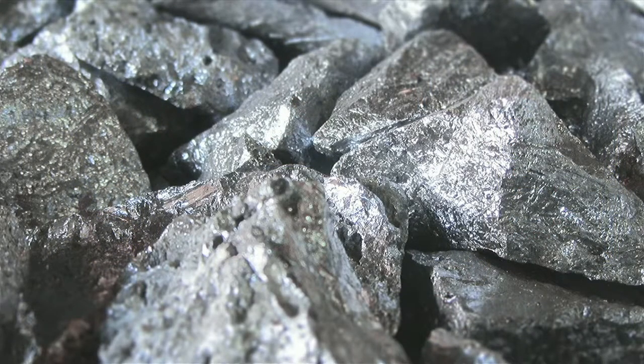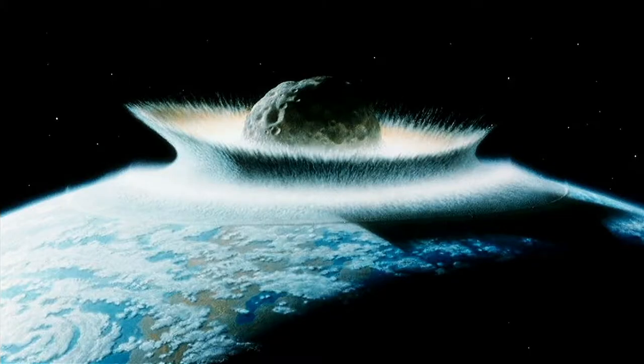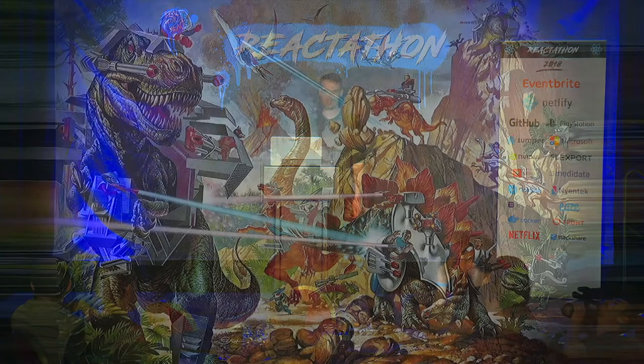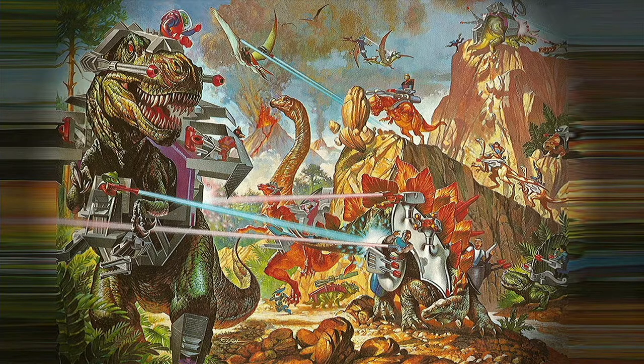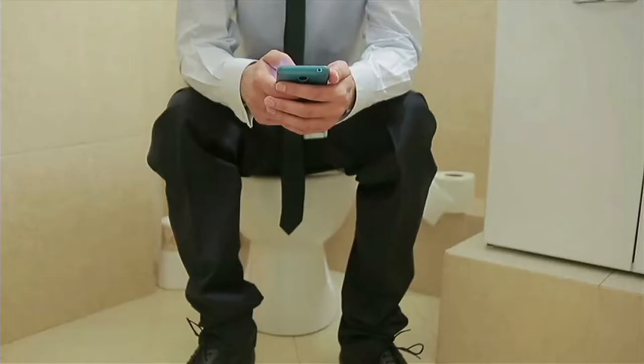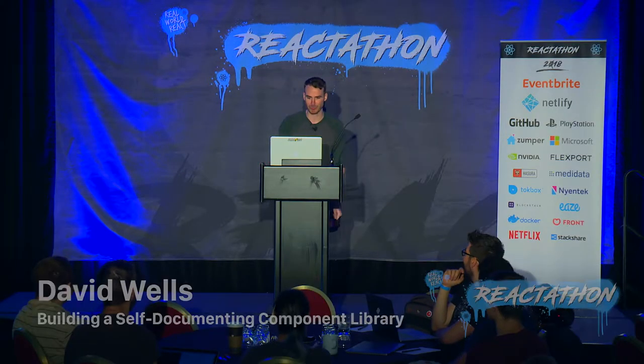So a long, long time ago — 65 million years ago — silicon was forming deep below the planet's surface. A great meteor hit the planet and spread the silicon dust across the globe. Dinosaurs learned how to harness the silicon and build advanced technology, but wars broke out, which ultimately led to their extinction. Fast forward to present day: that same silicon lives in our phones and is used to render React components.